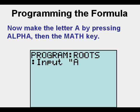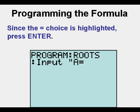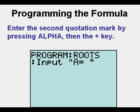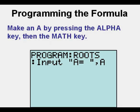Go to the Test menu by pressing the Second key, then the Math key. Since the Equals Sign choice is highlighted, press Enter. Enter a space by pressing Alpha, then the Zero key at the bottom of the keypad. Enter the second quotation mark by pressing Alpha, then the Plus key. Press the Comma key just above the 7 key. Make an A by pressing the Alpha key, then the Math key. Go to the next line of code by pressing Enter.